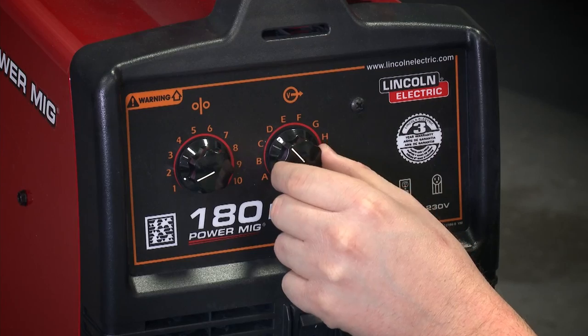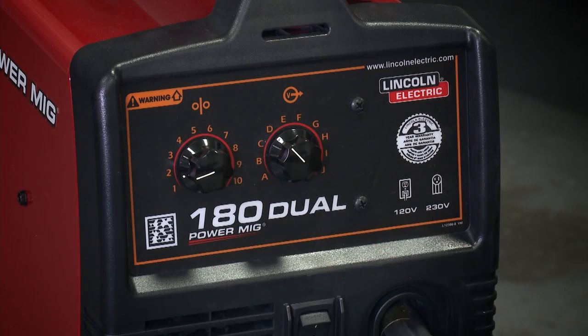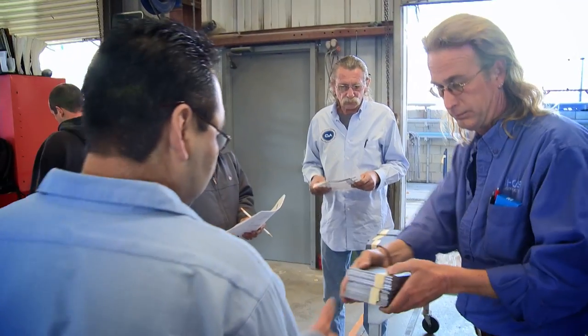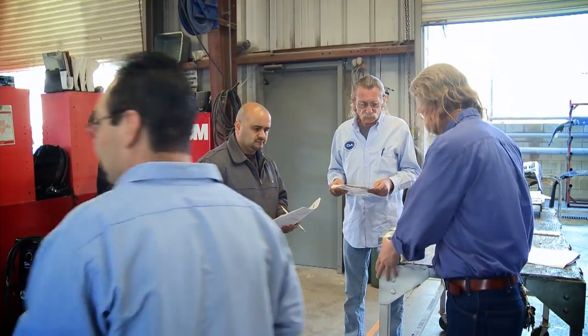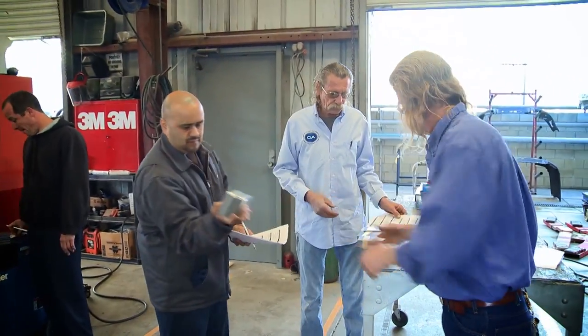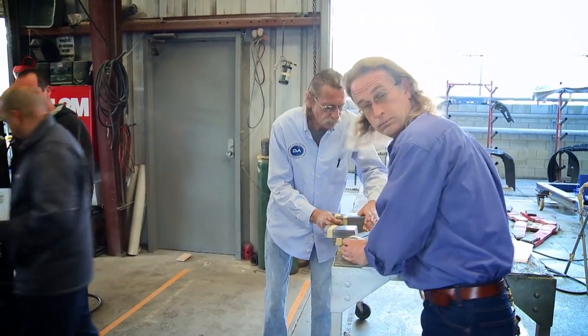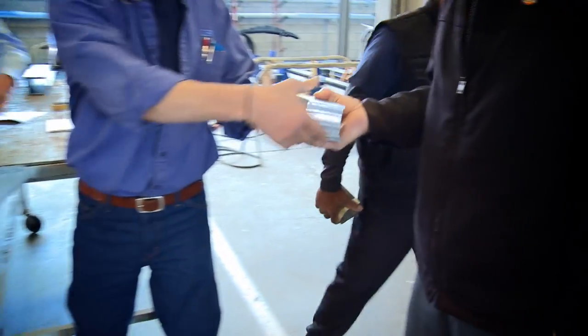Before starting the procedure, you'll need to tune the welder and practice four different welds on coupons provided. The coupons are the same gauges as the rail. The training administrator will destructively test your welds before giving you a rail.